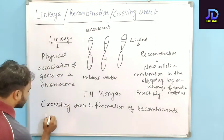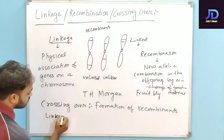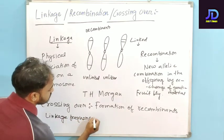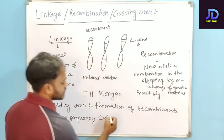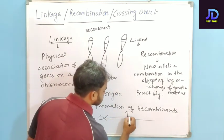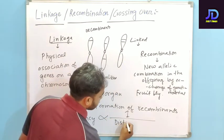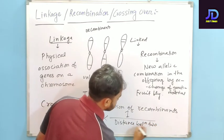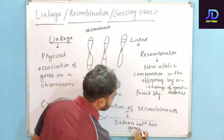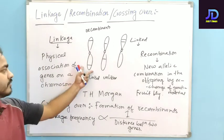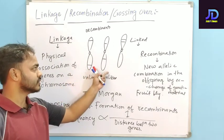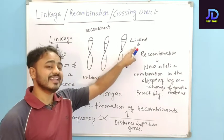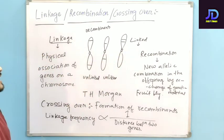That is why, when genes are far apart, the linkage will be less; when genes are a little closer, linkage will be a little more; and when genes are very close, the linkage will be higher — that is why those are called linked genes. Linkage frequency is inversely proportional to the distance between two genes.